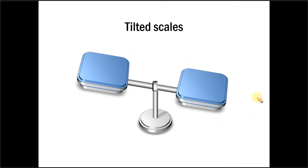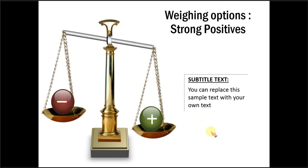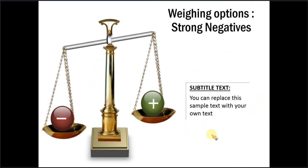In the templates, you also get this blank one, so you can actually add any object that you want which shows the tilted scales. Here is another option which shows scales in a different color with golden color. You have balanced diagram, here you have strong positives and here you have strong negatives.